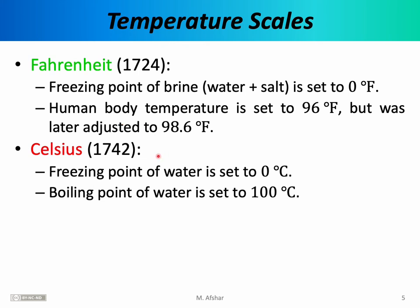A couple of decades after Fahrenheit, Anders Celsius, a Swedish physicist, introduced his temperature scale. Celsius recognized that the human body was not a very stable reference object, since body temperature varies throughout the day and depends on activity level, so he chose pure water instead. Initially he used an inverted scale — assigning 100 to the freezing point and 0 to the boiling point of water — but he quickly realized that wasn't intuitive and switched it. He assigned 0 to the freezing point and 100 degrees Celsius to the boiling point of water. The Celsius scale is also known as the centigrade temperature scale.